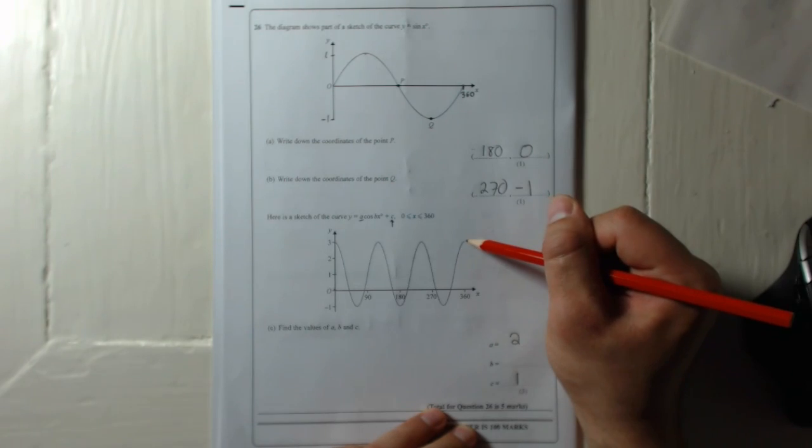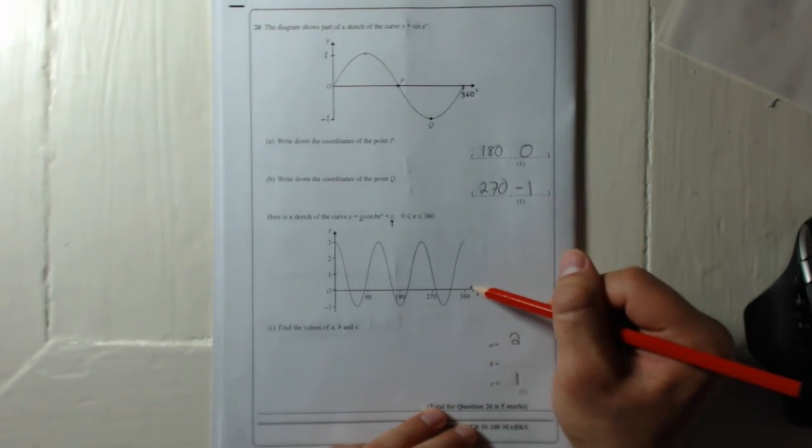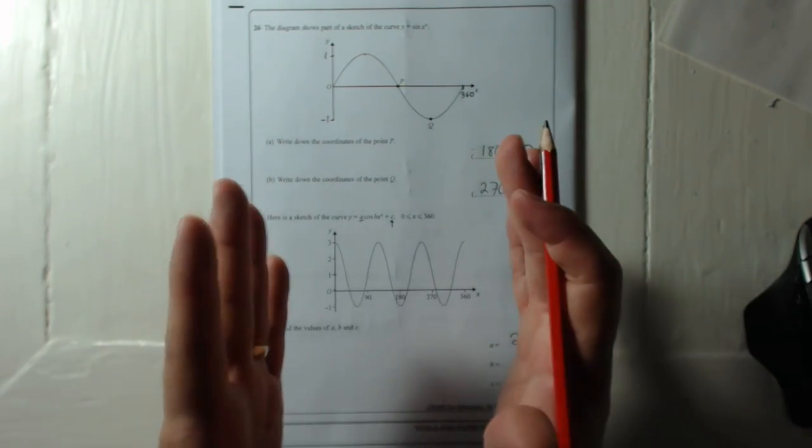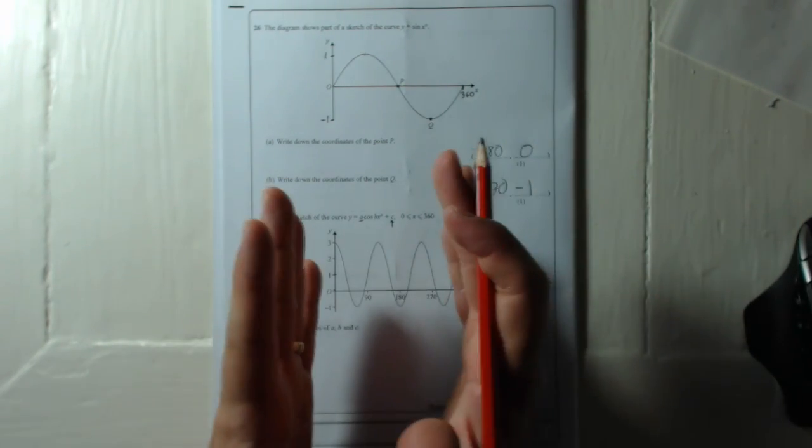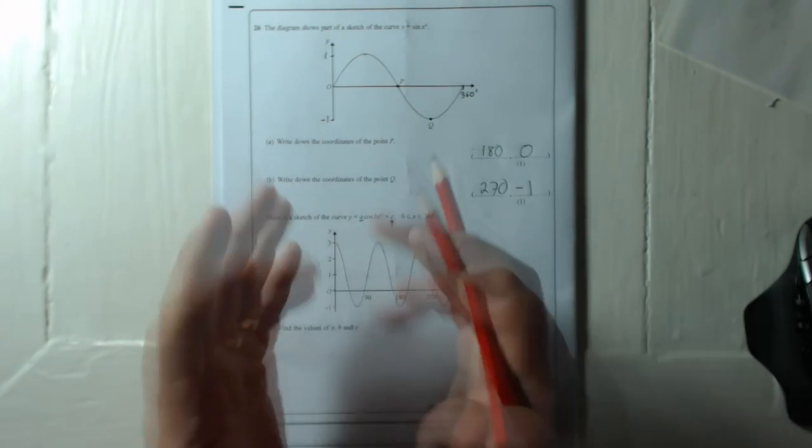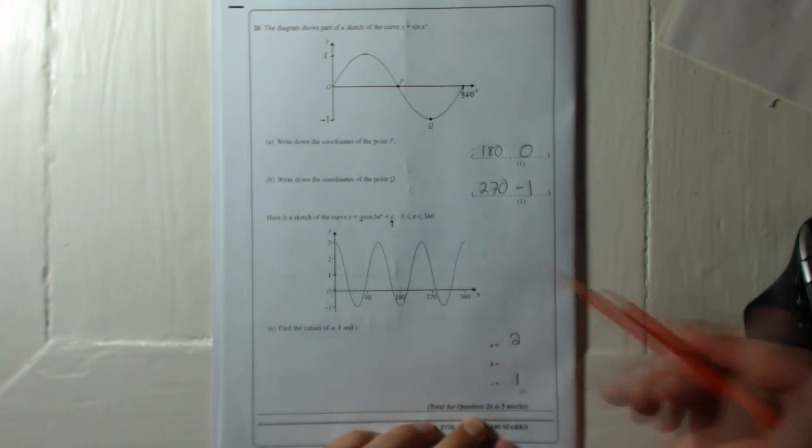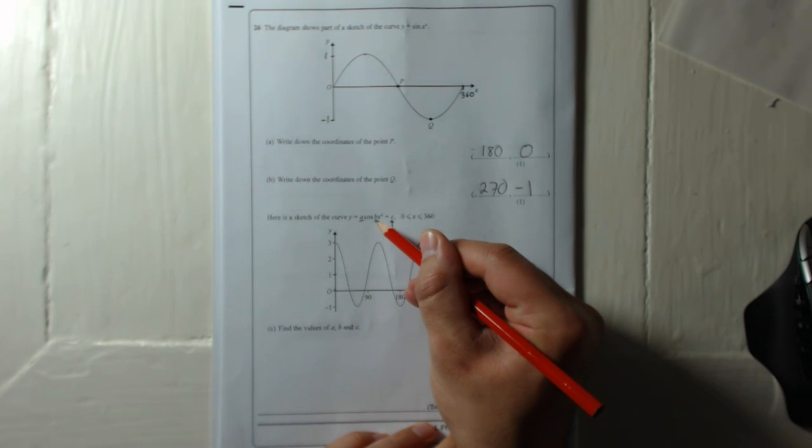So it's actually been squished by a scale factor of a third—it's three times as squished, so it's a third of the width. So the way it works, if it's a third of the width, that b has to be three.